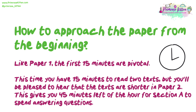Like Paper 1, the first 15 minutes are pivotal. You have 15 minutes to read the two texts, and you'll be pleased to hear that they are shorter in Paper 2. This gives you 45 minutes left of the hour for Section A to spend answering the questions. In terms of reading the texts, I would recommend reading the questions first to give you an idea of what you need to take notice of. You could highlight your first reading of the text this way — for example, if question 2 asks you to summarise the students' uniforms in both texts, you could be highlighting any information about the students' uniforms. This may well save you precious time later on.